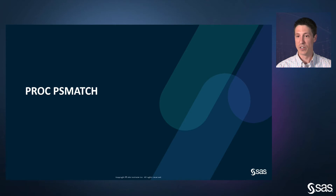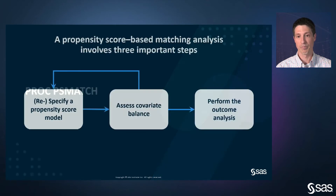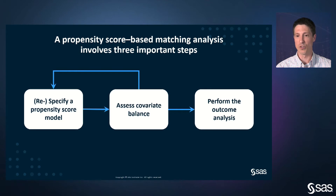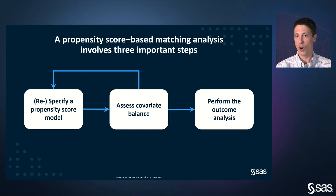Now let's use PROC PS Match to estimate the causal effect. Recall that for observational data, non-random sampling might introduce confounding bias because individuals self-select the treatment or control condition. Propensity score modeling is a way to account for this biased selection of treatment, leading to adjustment methods such as propensity score matching, weighting, and stratification. The development of a propensity score model is an iterative process in which you repeatedly develop and assess the quality of covariate balance. You proceed to the outcome analysis only after achieving a model of sufficient quality, as indicated by various diagnostic tools. In the interest of time, I will skip the iterative process, but PROC PS Match provides a large collection of covariate balance diagnostics to help with this process.